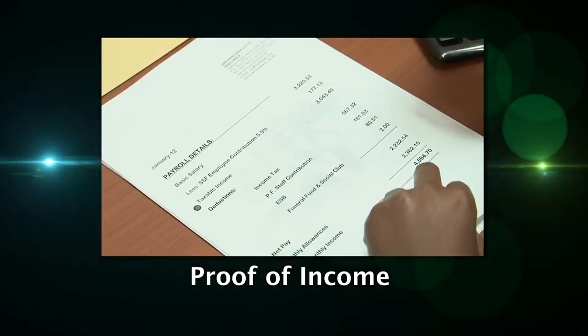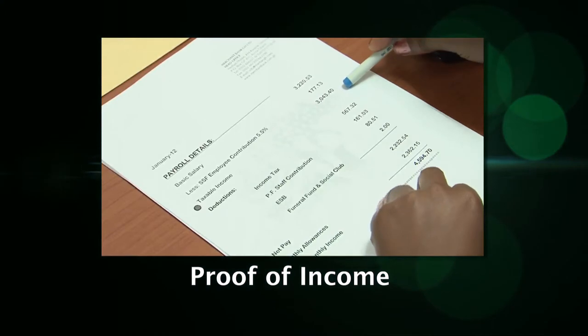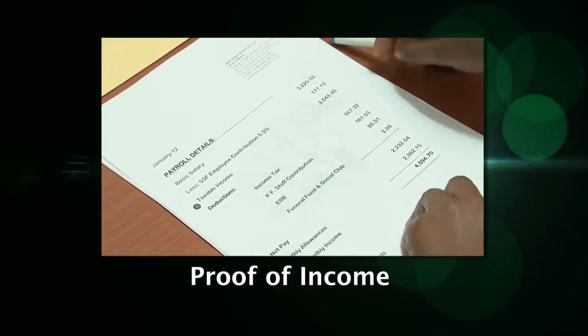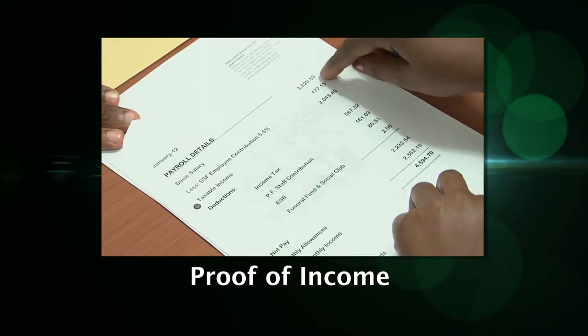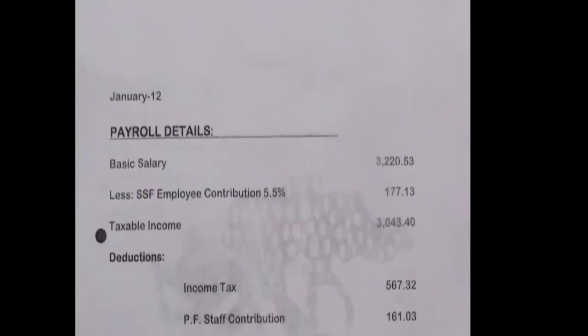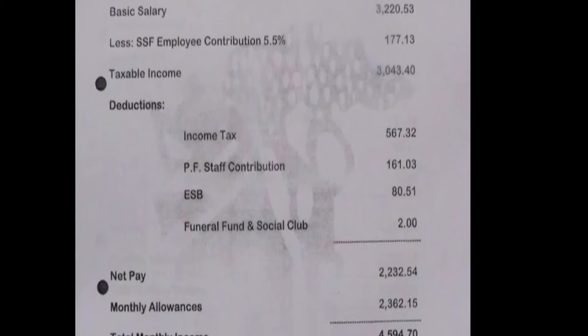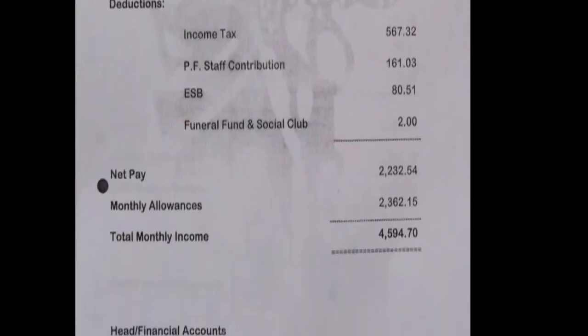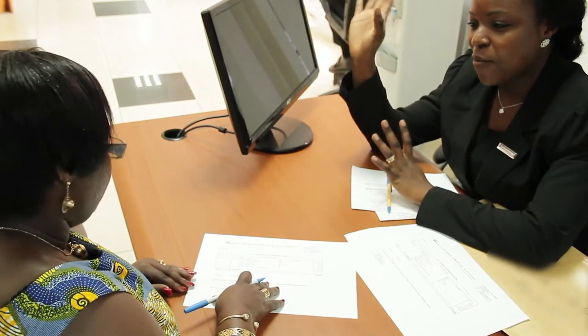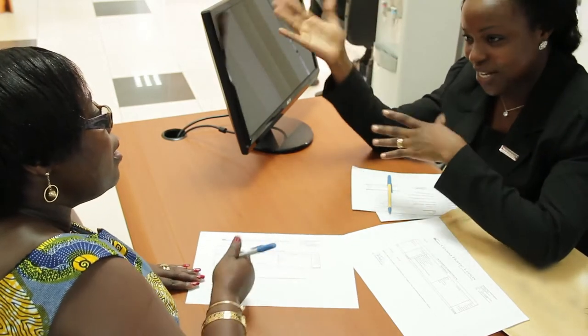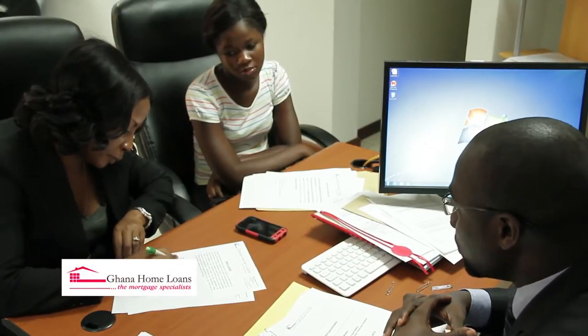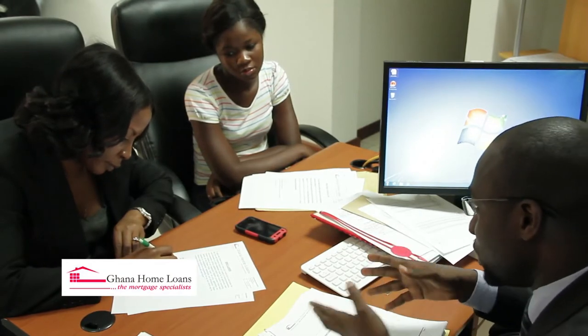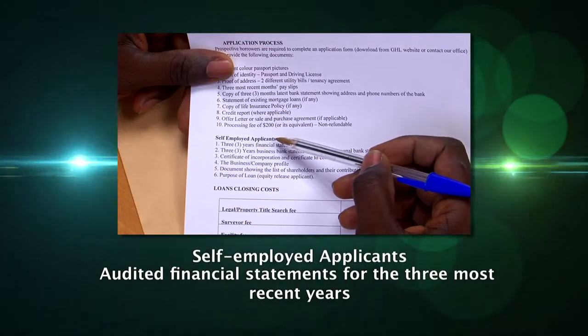2. Proof of income — any document acceptable to Ghana Home Loans which confirms how much you earn a month. If you are a salaried worker, you need to provide your three most recent pay slips. The more detailed the pay slips, the better. If you have more than one job or are a full-time employee with other sources of income, please provide details of the secondary income sources as well. We shall evaluate these income sources and, if acceptable to us, increase the loan amount we offer you. If you are self-employed, you must provide the following.